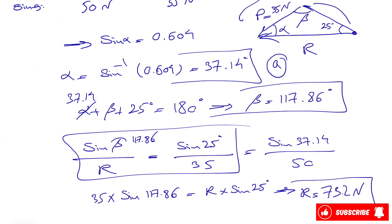That is the final answer for part (b) — the magnitude of the resultant R is 73.2 newtons. Please make sure to subscribe to the channel and let me know if you have any specific problem from the three textbooks we cover. I'd be happy to cover it in the next videos. Take care and I'll see you in the next one.